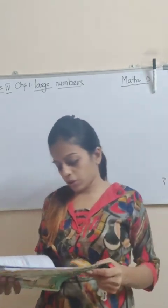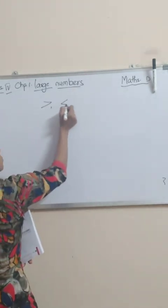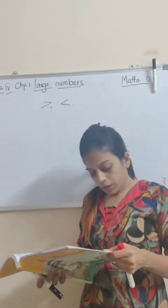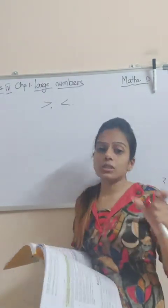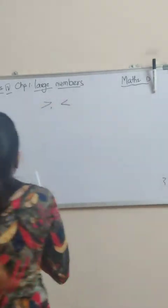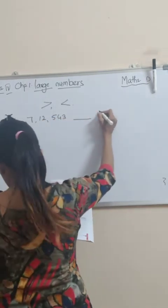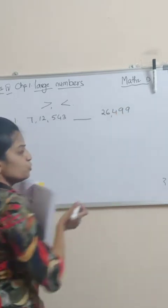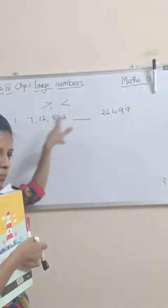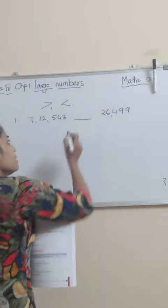Which sign should you put in the box between the following numbers? You know the greater than and lesser than sign? Yes, this is the greater than and lesser than sign, students. So you have to put that one. To put that, what will you do? Firstly, students, whatever numbers are there, you just count the numbers. See, here I will write it on the board. In the first one, you have the number 712543 and on this side you have the number 26499. You need not work so hard for it — simply count the numbers: 1, 2, 3, 4, 5, 6. Here are six numbers and here are only five numbers. So obviously, here is 5 and here is 6 — that means you can put the greater than sign here.